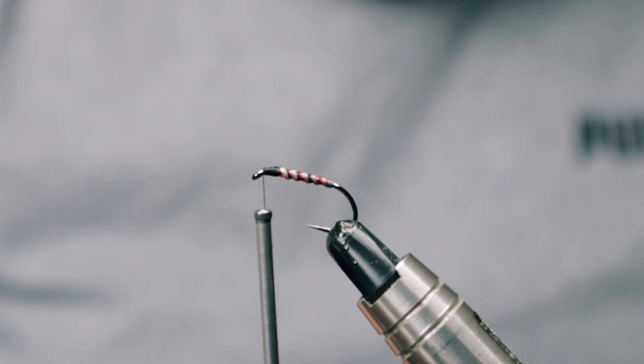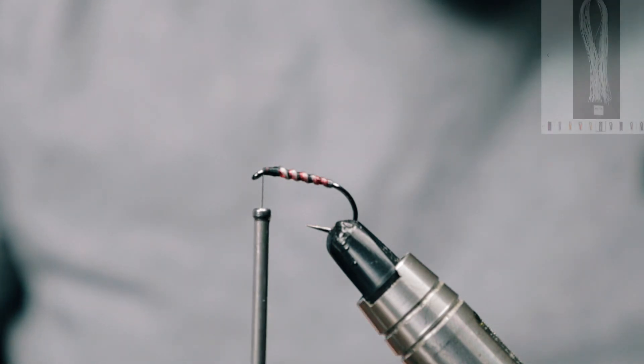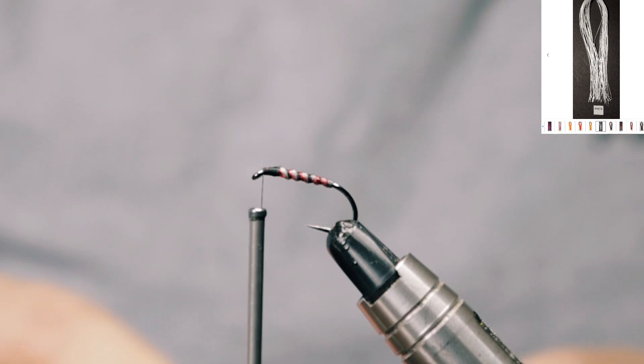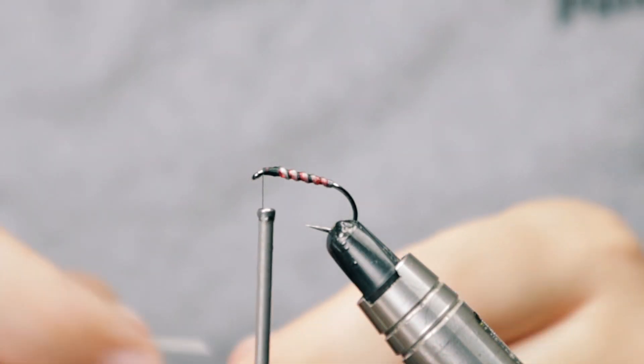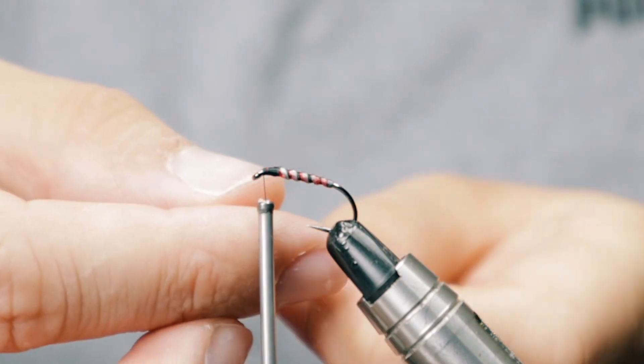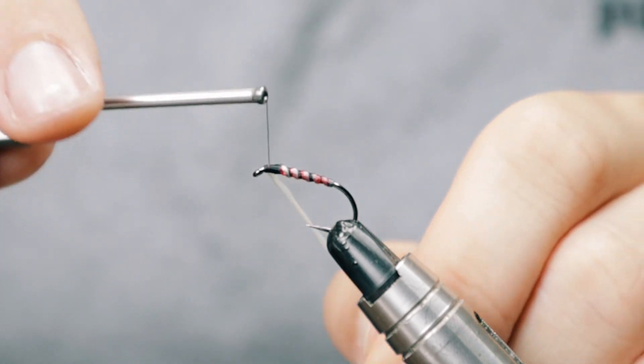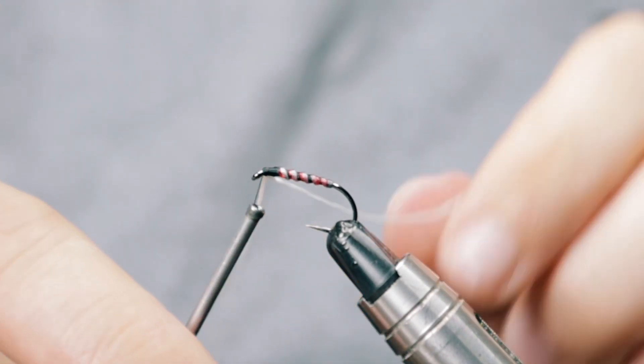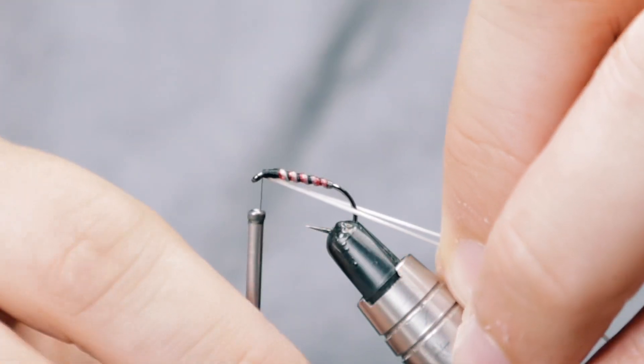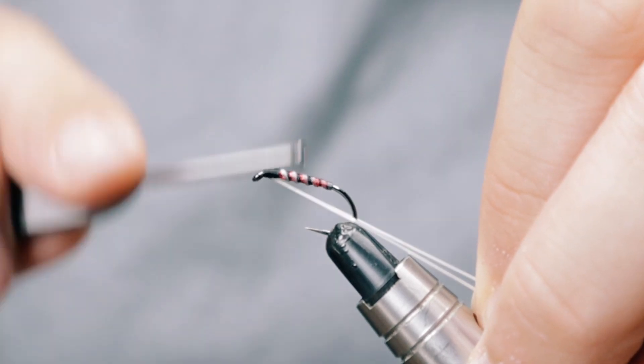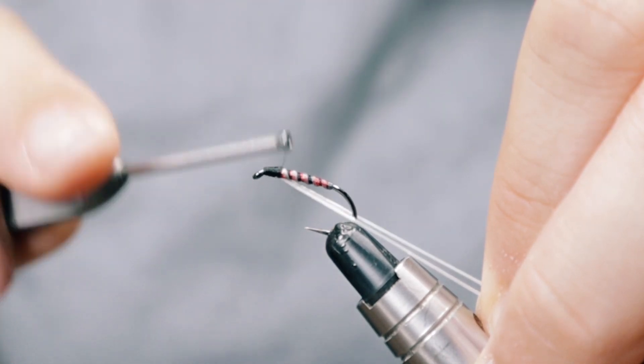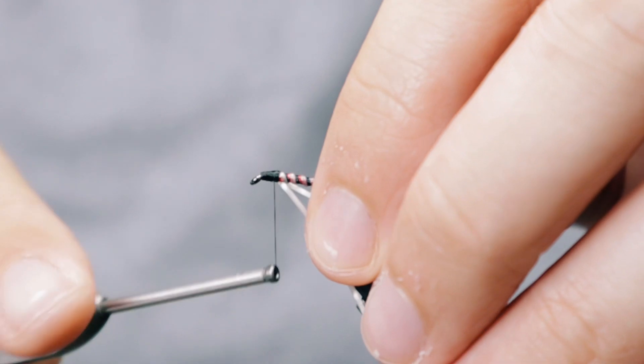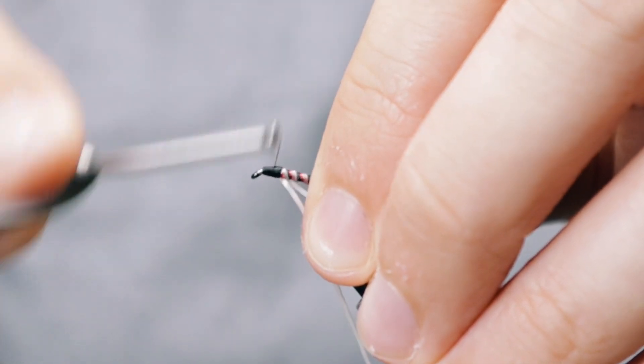And then I'm coming in with another bit of flexi floss - this is white this time. Just catching onto the thread, come around with a couple of turns, and taking one of these down either side, pulling it down and back nice and tight. You can wind backwards.